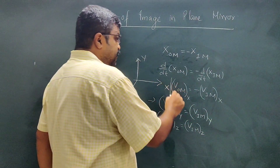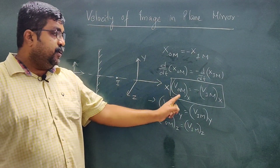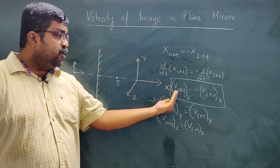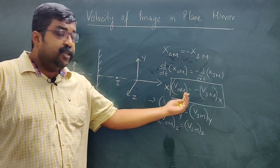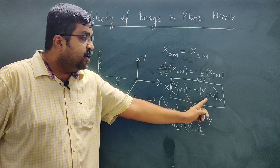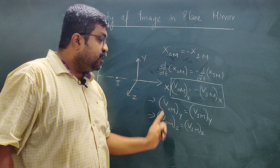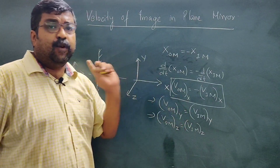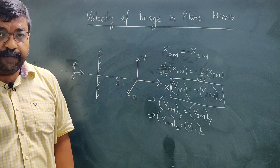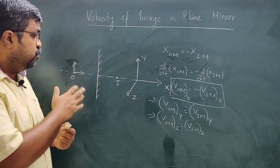So the key concept is: if the velocity is perpendicular to the mirror, then the relative velocity of the object with respect to the mirror equals the relative velocity of the image with respect to the mirror but with a negative sign. For the parallel component, there is no negative sign. This is a very important concept, and based on it we can solve all cases.